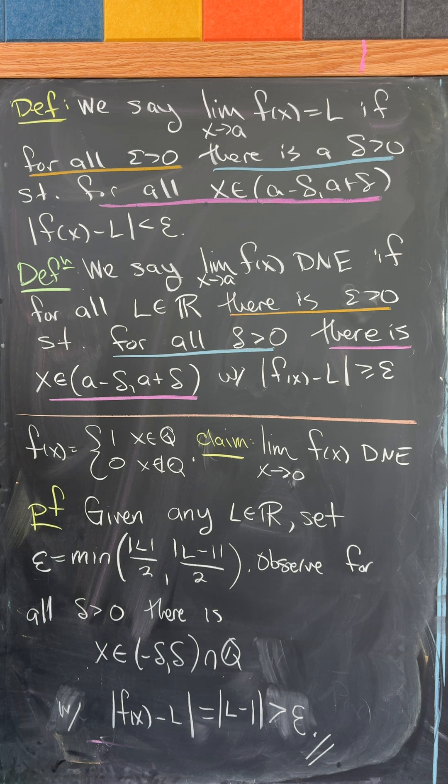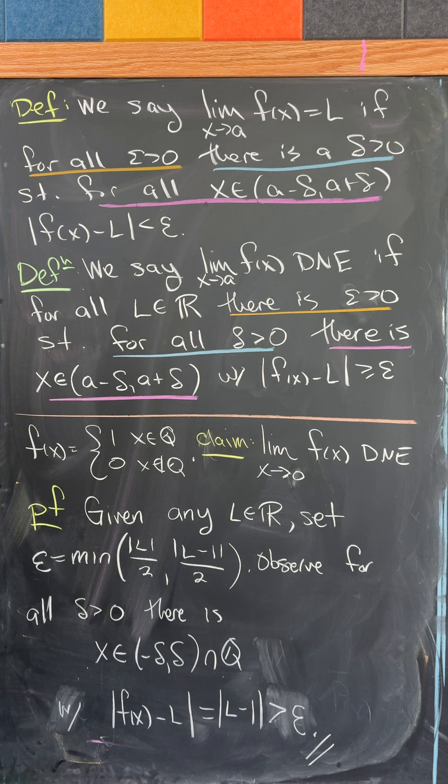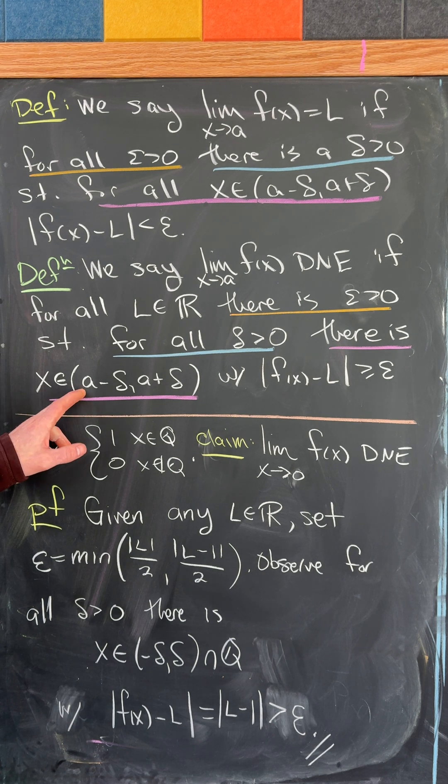Now when we negate that we'll end up with the limit as x goes to a of f of x does not exist if for all l real numbers there is an epsilon bigger than 0 such that for all delta bigger than 0 there is an x on this interval where the inequality is reversed.